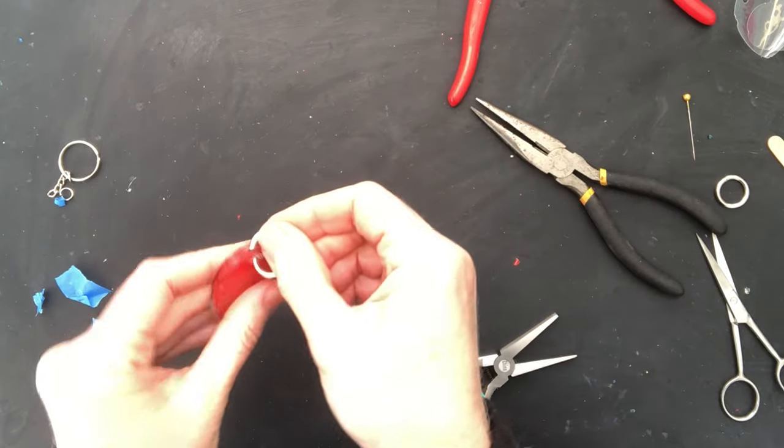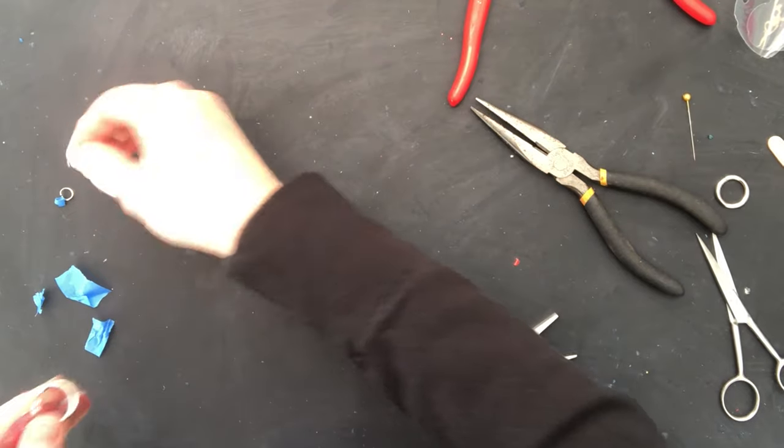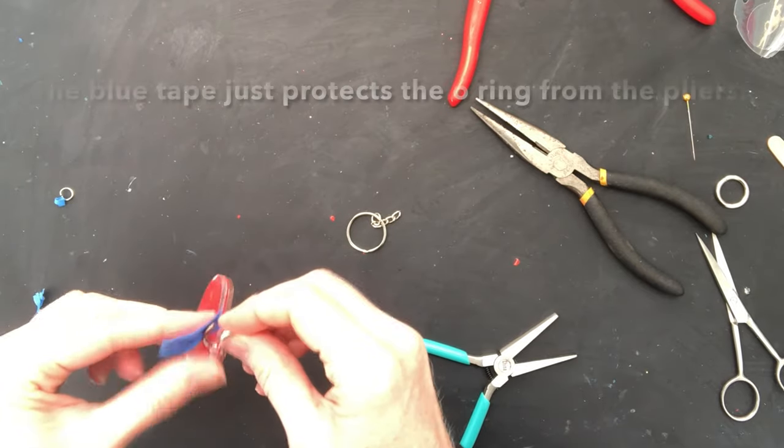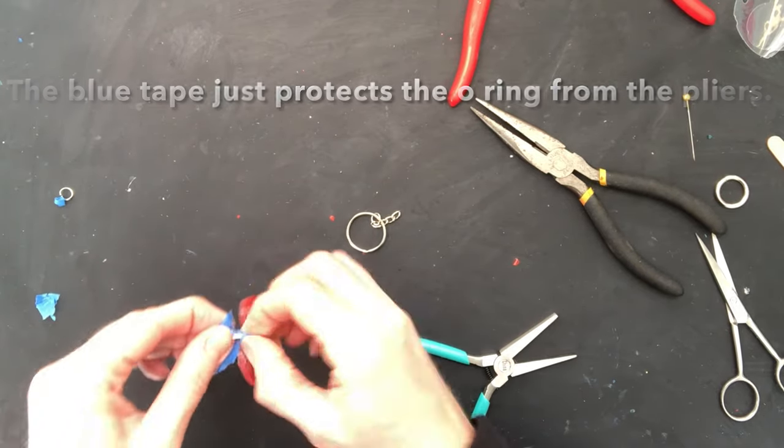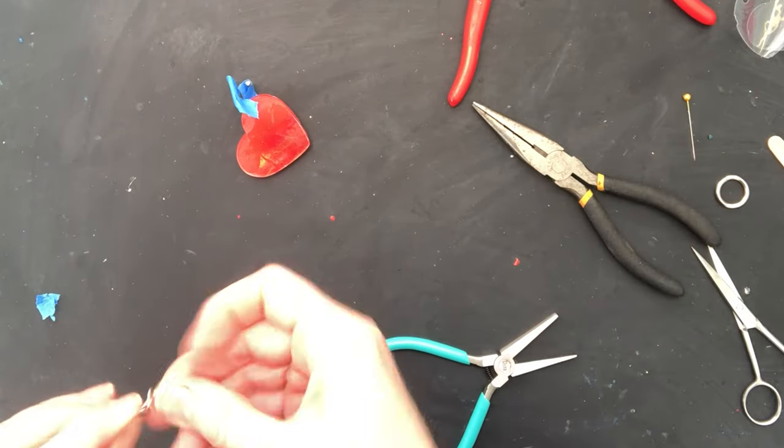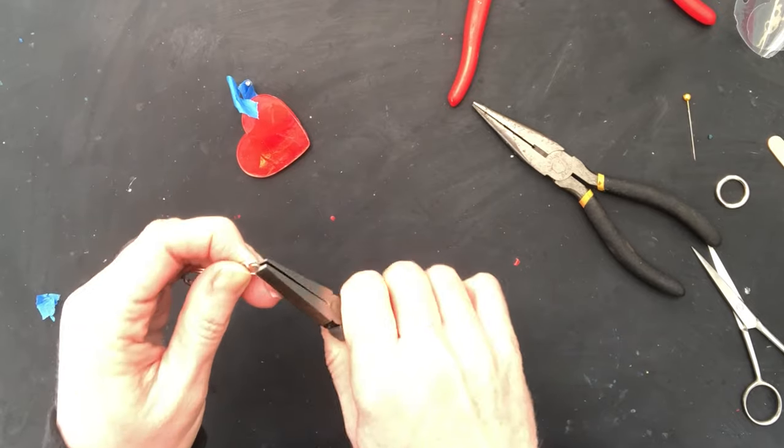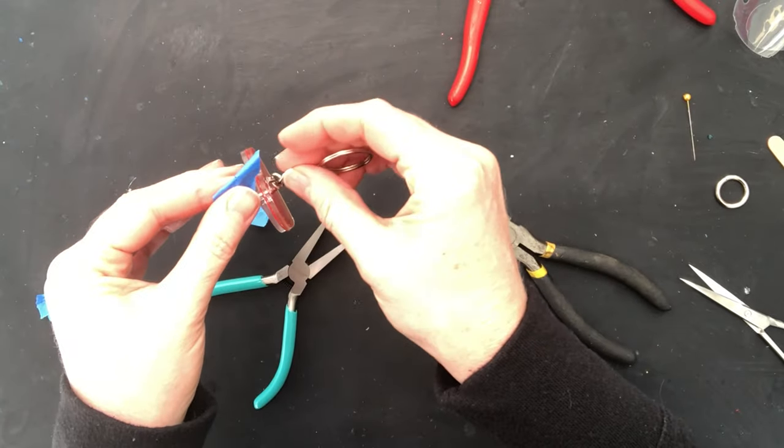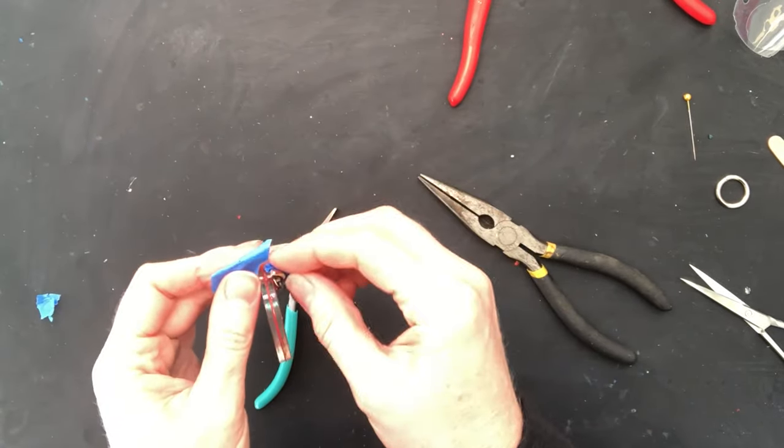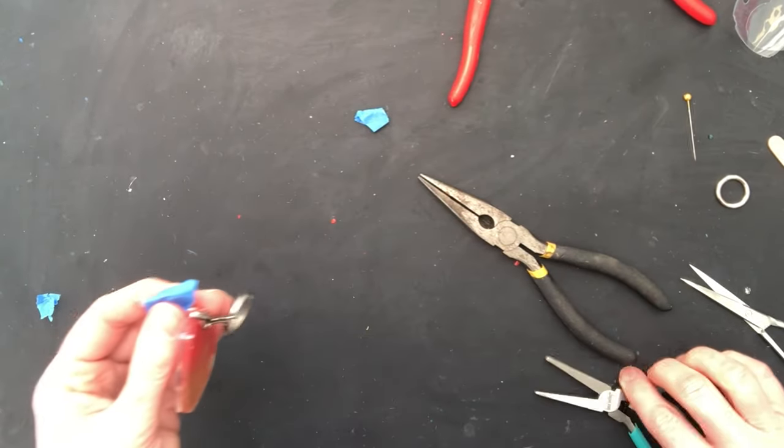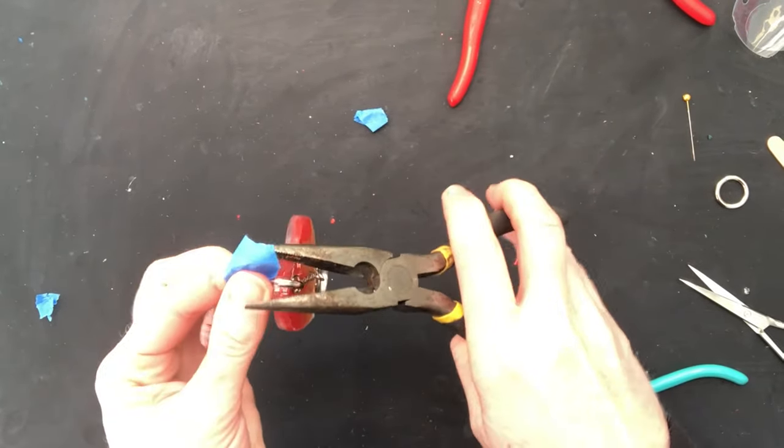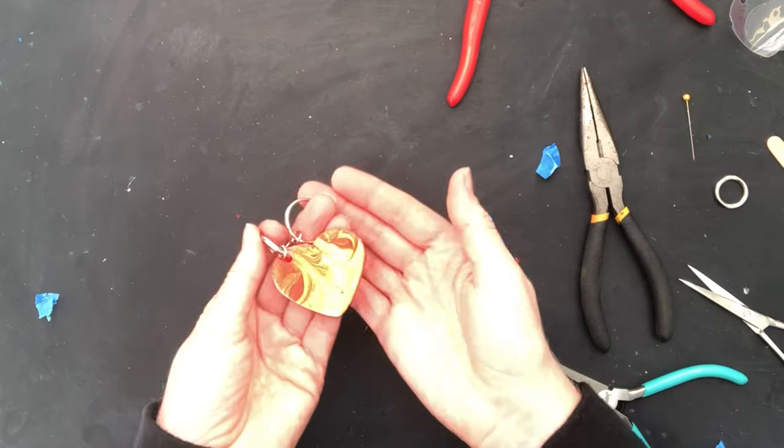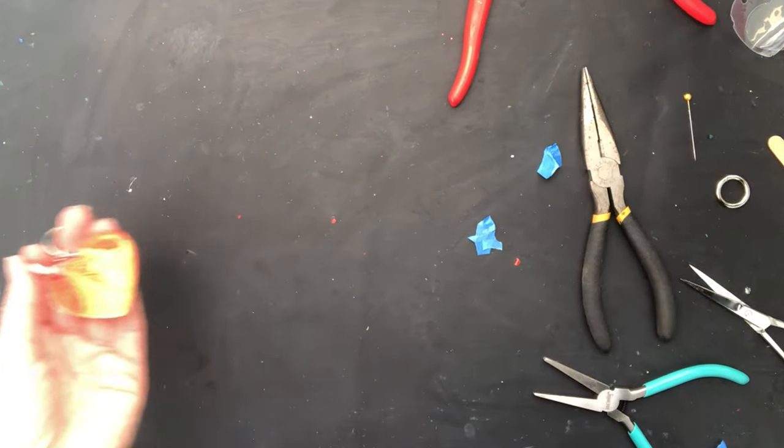So once you just bend it open you'll stick your O-ring through here like so and you'll be able to attach your keyring. And then just close up your ring. You just close up your keyring and then you are good to go.